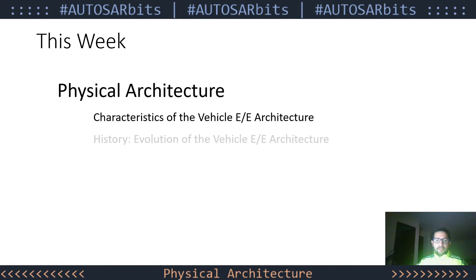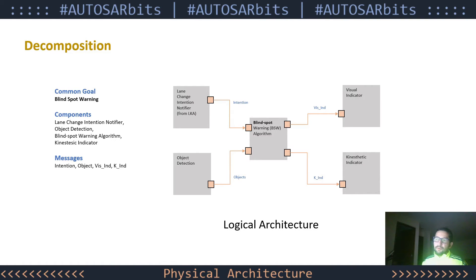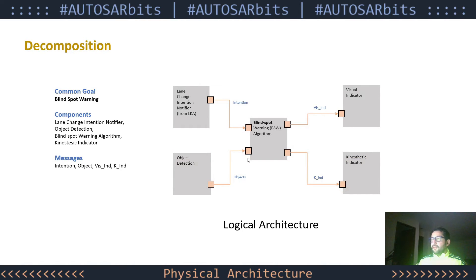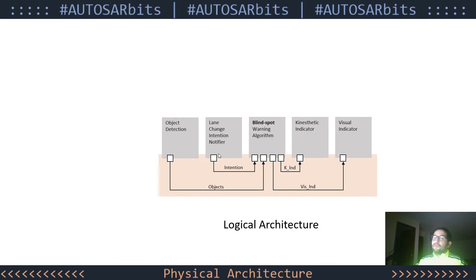In the next session we're going to explain the history — that is the evolution of the vehicle electrical and electronic architecture. So just to give some previous information: the logical architecture is the product of the composition of functions into a set of components, and in this architecture we also define the messages that are interchanged between these components. We also see that this view has the same information — components, messages, interfaces — it's just that this view is more common in the Autosar documentation.